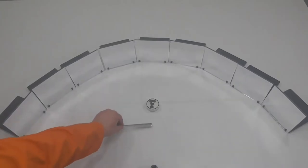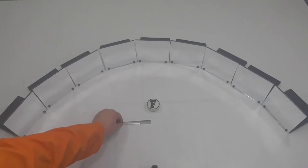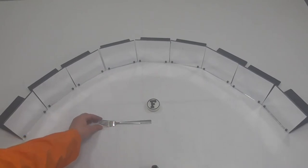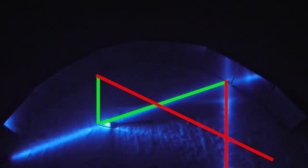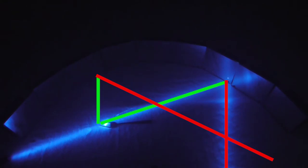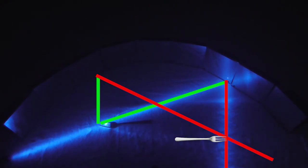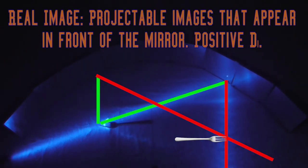If we placed an object like a fork in front of the mirror, we would still need two rays to prove the image's location. Light travels straight from the top of the object and reflects through the focal point. If that light travels from the top of the object through the focal point, it reflects straight back out. Where these two reflected rays cross, the top of the image would appear. This would create an inverted or upside-down image. Since the rays of light appear to cross in front of the mirror, this is called a real image.